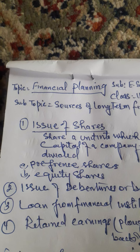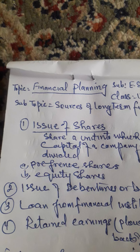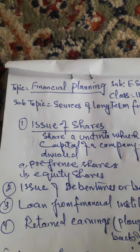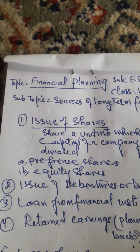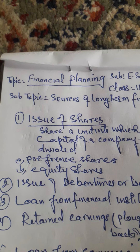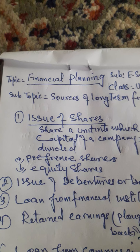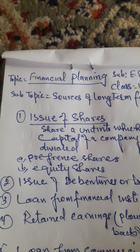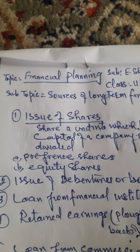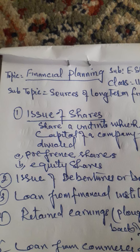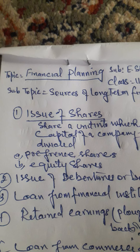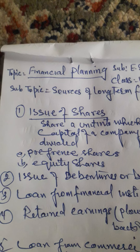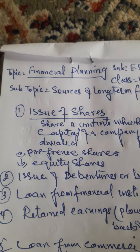The first source is issuance of shares. First of all, what is a share? Shares are the most universal form of raising long-term funds from the public. The capital of a company is divided into a number of equal parts, and those parts are known as shares. So we can say a share is a unit into which the total capital of a company is divided.